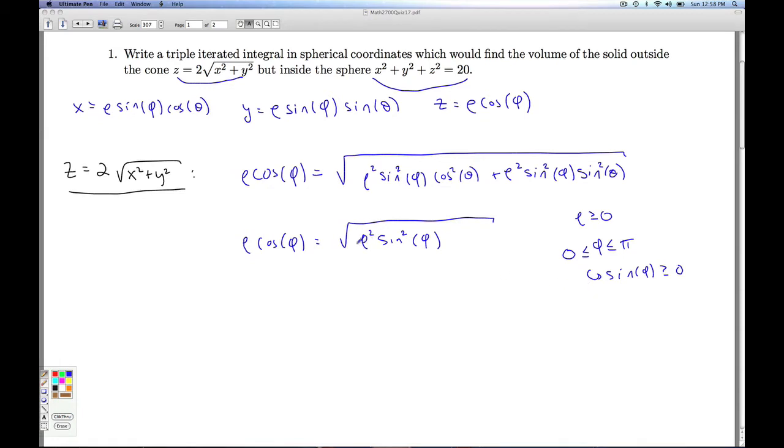Which means I can go ahead and simplify this square root and not worry about needing absolute values. So I get rho cosine phi—I've dropped the 2, haven't I? There's a 2 that goes there. I get rho cosine phi is 2 rho sine phi.